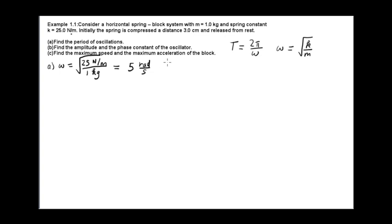The period T is simply 2 pi over omega, so T equals 2 pi divided by 5 radians per second. The radian is not a real unit, but I include it to remind me that I'm dealing with omega and not f. So T equals 2 pi over 5, giving a value of 1.26 seconds. That's part a.